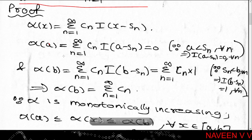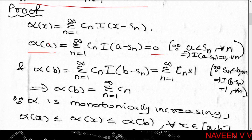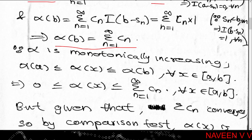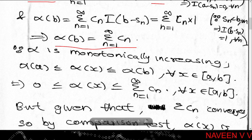For each n, since a < sₙ, we have I(a - sₙ) = 0. And I(b - sₙ) = 1 since sₙ < b. So α(a) = Σ(n=1 to ∞) cₙ · 0 = 0, and α(b) = Σ(n=1 to ∞) cₙ · I(b - sₙ) = Σ(n=1 to ∞) cₙ · 1 = Σ(n=1 to ∞) cₙ. So α is monotonically increasing and for each x in [a,b], α(a) ≤ α(x) ≤ α(b).